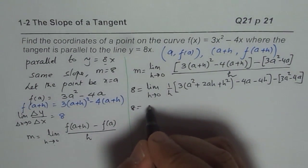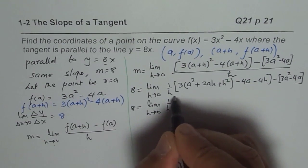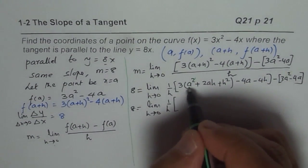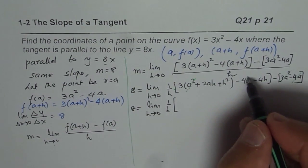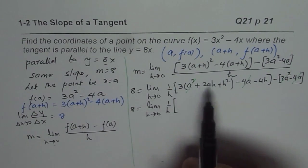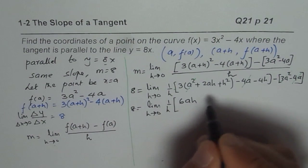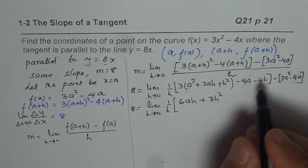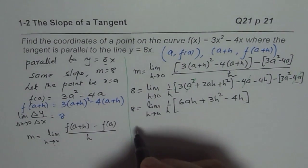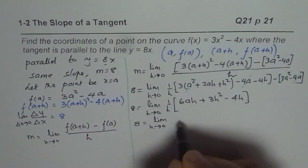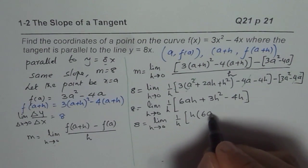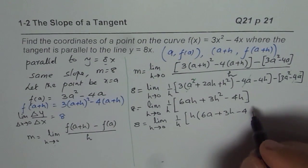So, 8 equals limit h→0, 1/h over... Let us see what can cancel. Both these terms will always cancel. 3a² should cancel with 3a², -4a should cancel with -4a. Once you cancel, you can write the simplified expression. Expand this: 3×2 is 6, you get 6ah + 3h² - 4h. That is what you get.